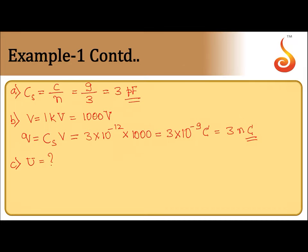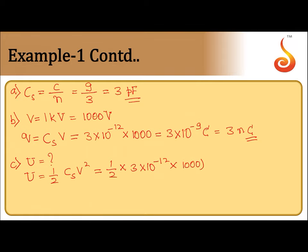Next, we find the energy stored in the combination. The formula is energy equals half C into V squared, where the effective capacitance is Cs. So energy equals half into three picofarad — three into ten to the power minus twelve — into one thousand squared. That gives one point five into ten to the power minus six joule, which is one point five microjoule.